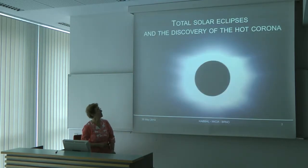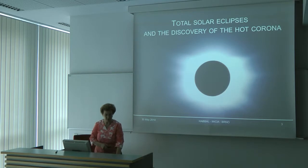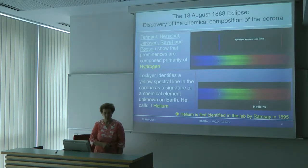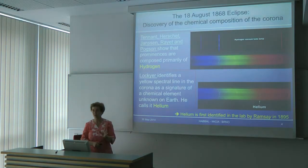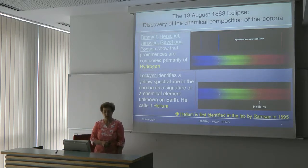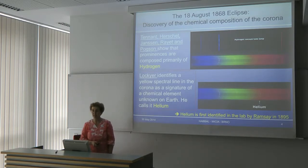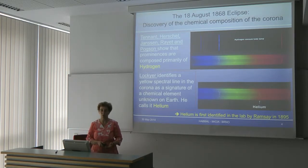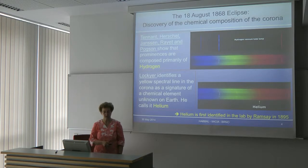A very brief overview of the corona: it's really the fortuitous distance, size scale between the sun, the earth, and the moon that makes total solar eclipses possible. Without them, it might have taken us much longer to discover that the sun has an outer atmosphere that we call the solar corona — or the crown of the sun.